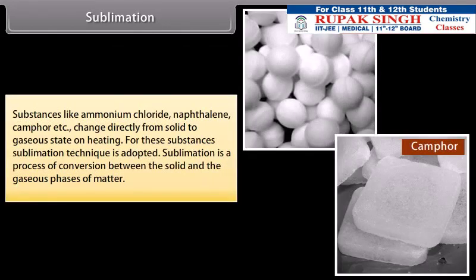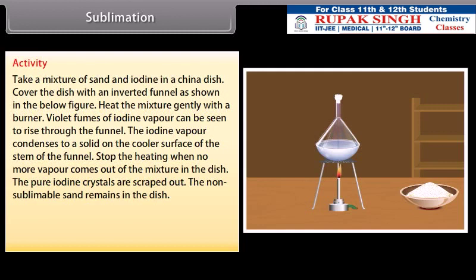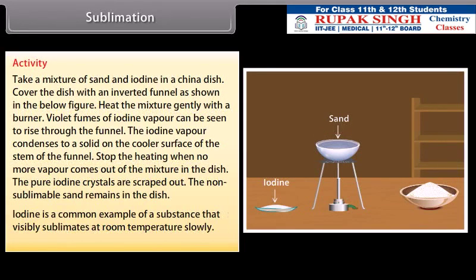Substances like ammonium chloride, naphthalene, camphor, etc., change directly from solid to gaseous state on heating. For these substances, the sublimation technique is adopted. Sublimation is a process of conversion between the solid and the gaseous phases of matter. The pure iodine crystals are scraped out, while the non-sublimable sand remains in the dish. Iodine is a common example of a substance that visibly sublimates at room temperature slowly.